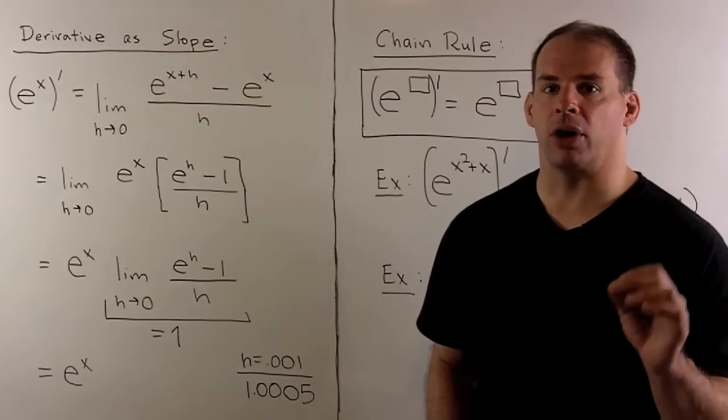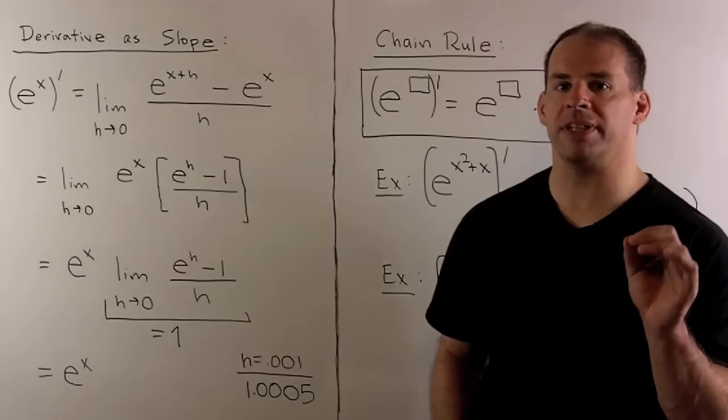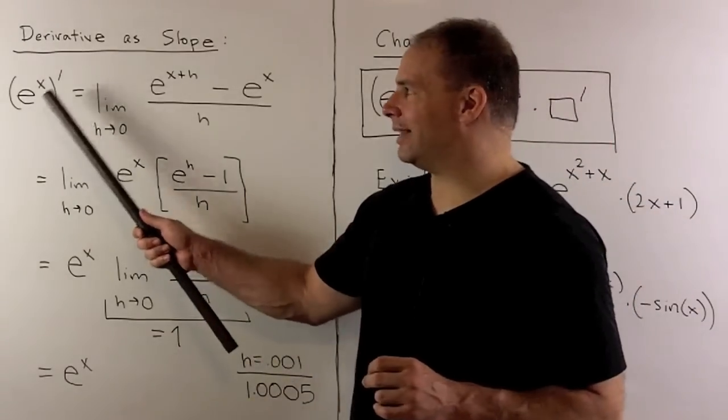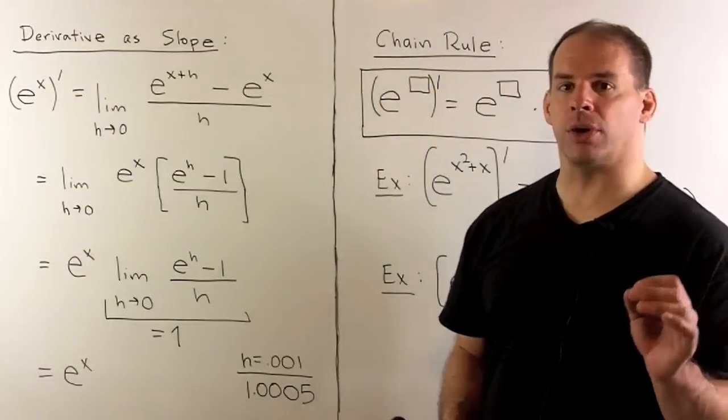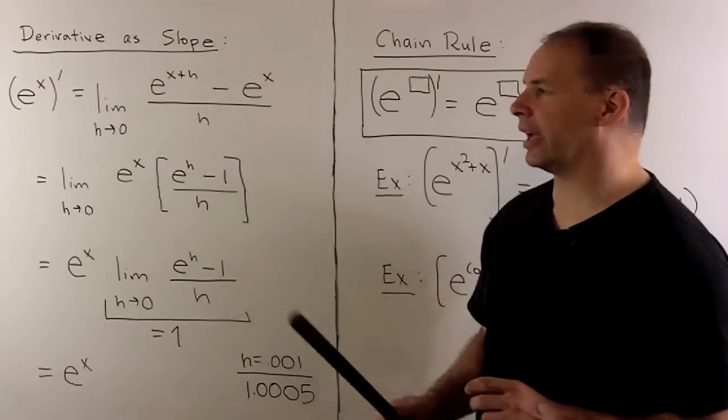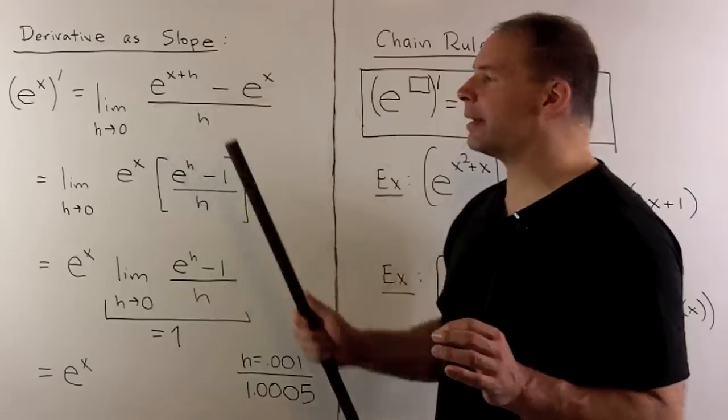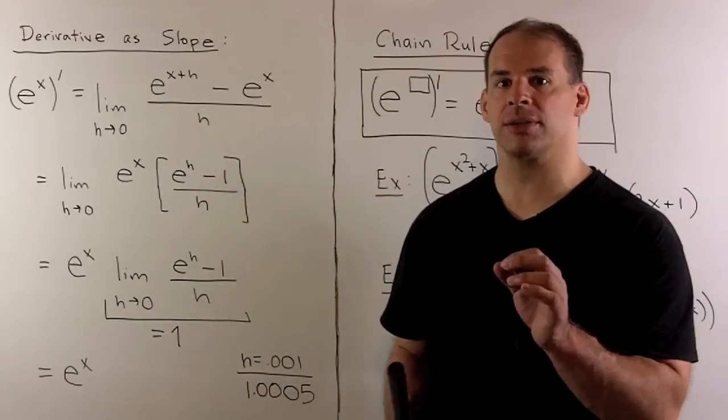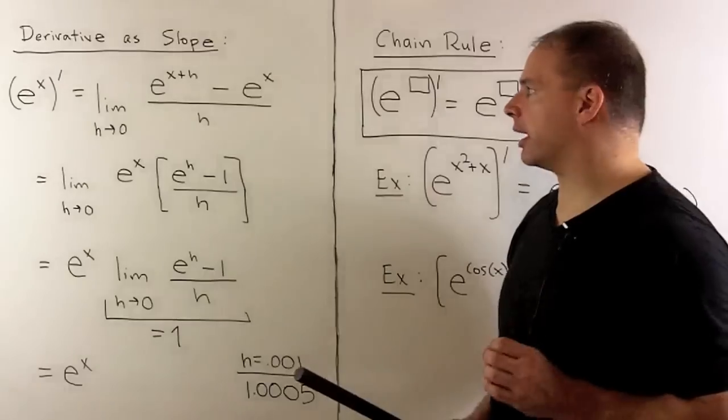Next, we verify that our result is consistent with the definition of derivative as a slope of a tangent line. So, we have e to the x prime defined as the limit as h goes to 0, e to the x plus h minus e to the x divided by h. So, here, I have the slope of the secant line for our graph, the points x plus h and x. Then, we take the limit as h goes to 0. So, that'll give us the slope of the tangent line.